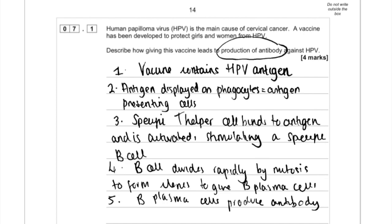With all of these questions, you need to mention that the vaccine is going to contain an antigen — all vaccines stimulating the immune system will contain an antigen. That will get you one mark. Then this antigen will be displayed on a phagocyte, which will become an antigen-presenting cell. That's important because it will enable a specific T helper cell with a receptor complementary to that antigen to become activated.